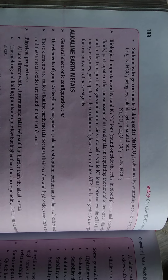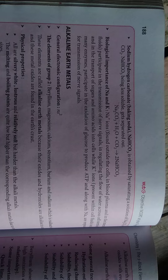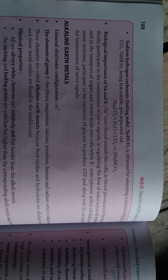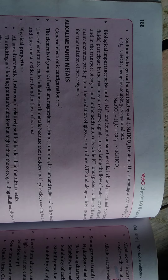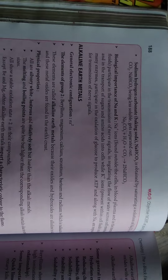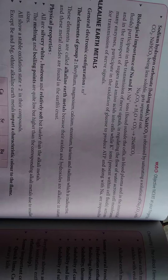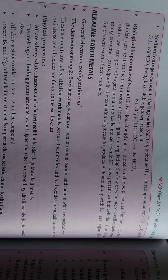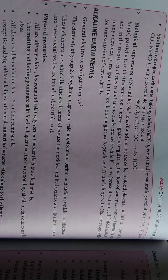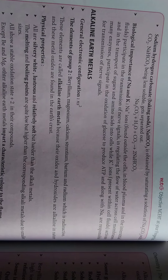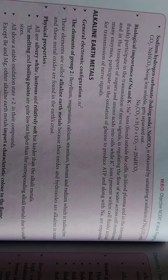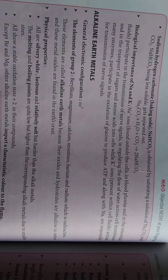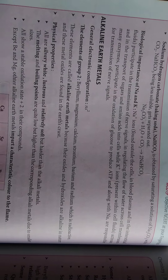Sodium hydrogen carbonate, or baking soda NaHCO3, is often obtained from the saturated solution of Na2CO3 with CO2. NaHCO3 is less stable and will separate out into Na2CO3 plus CO2 and NaHCO3.